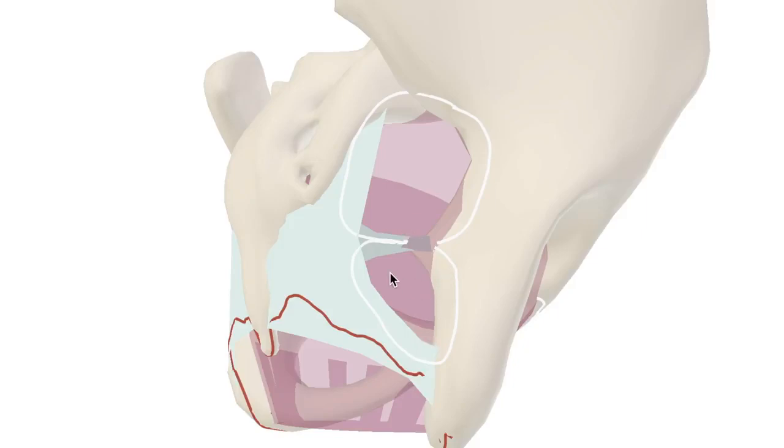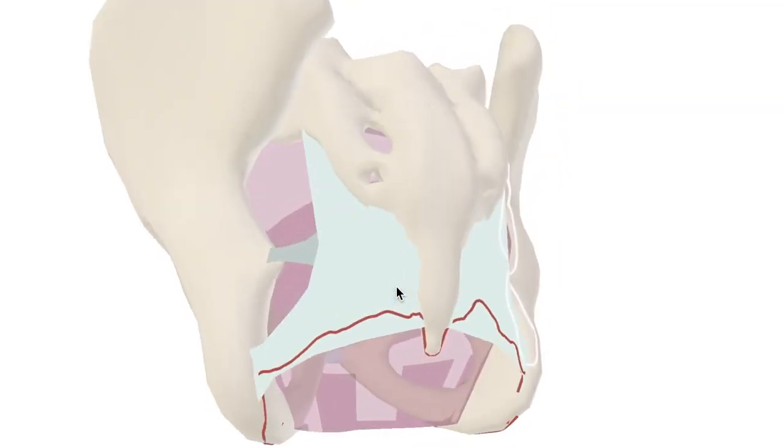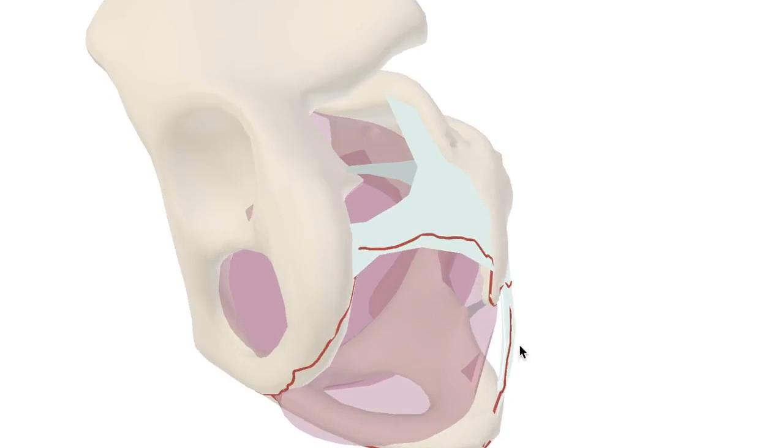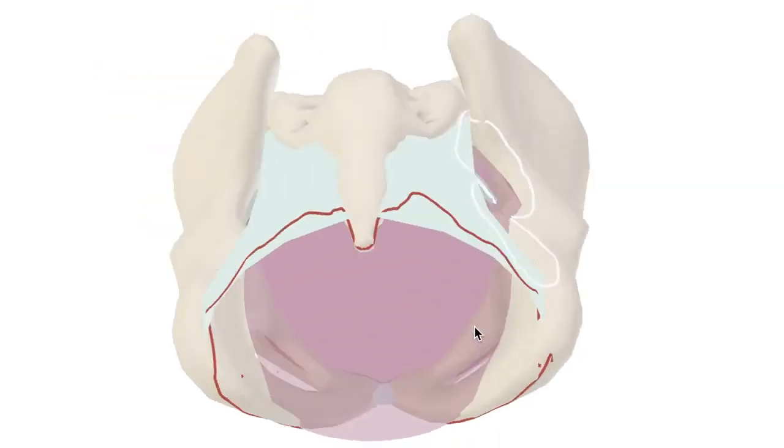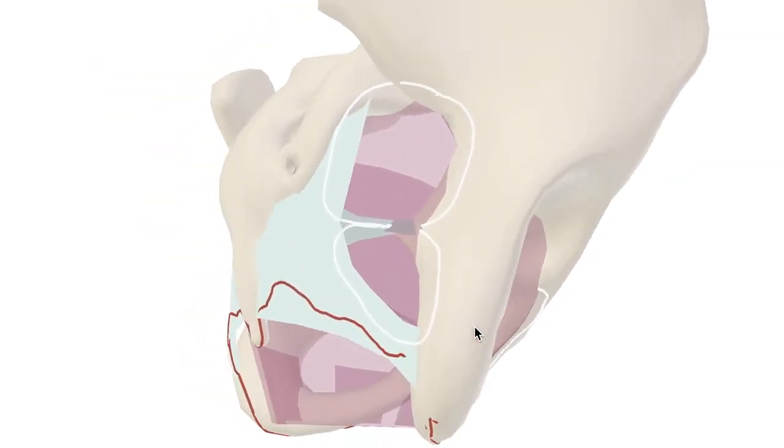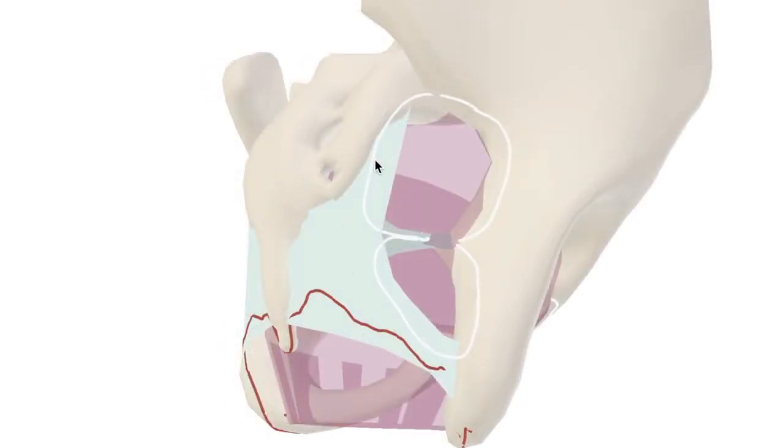Sciatic notches which they relate to. So I mentioned the sacrotuberous ligament before. Get rid of that to show you this is the sacrospinous ligament. They both serve to stabilize the bony pelvis.